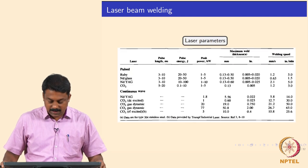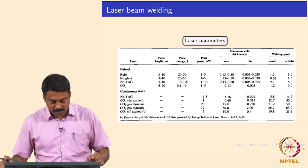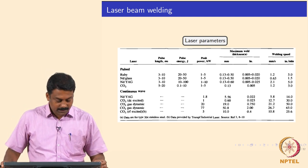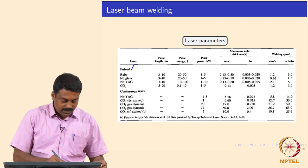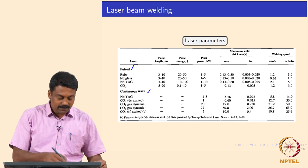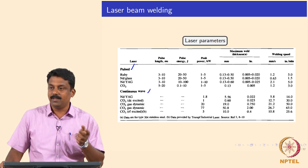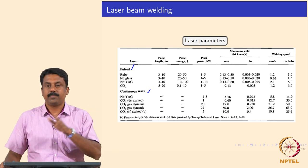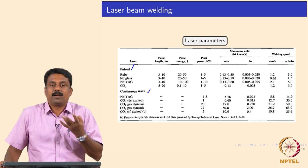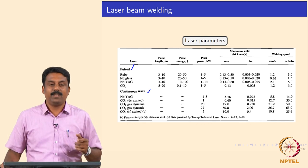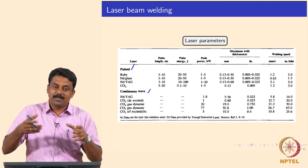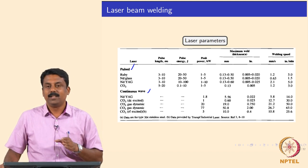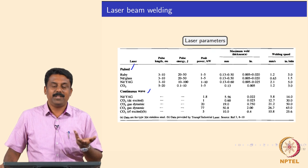So some laser parameters taken from a handbook for reference. You can use, for example, pulsed laser and continuous wave laser. The difference between these two is that pulsed lasers have discrete pulses, while continuous wave lasers produce a continuous output. Inside a continuous wave there will also be pulses but they are overlapping - like femtosecond pulses - making it continuous in a subjective sense.